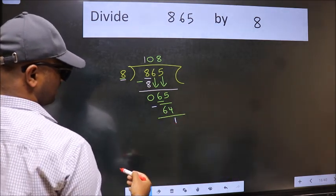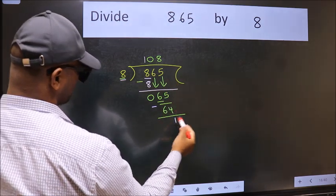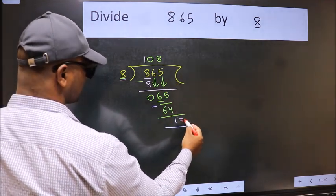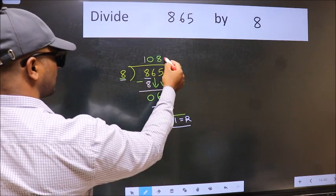1. No more numbers to bring down, so we stop here. This is our remainder and this is our quotient.